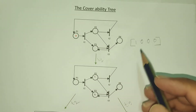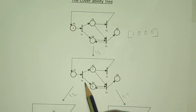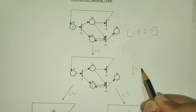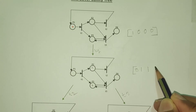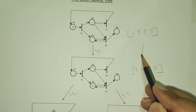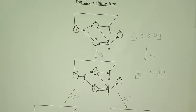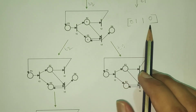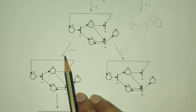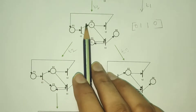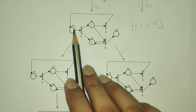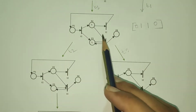The T1 transition answer: P1 has a token, P2 is not a token, P3 is not a token, and P4 is not a token. So T1 transition answer is because E0 1 1 0 is due to the transition. T2 is T3. So we chose to see how T2 would work.